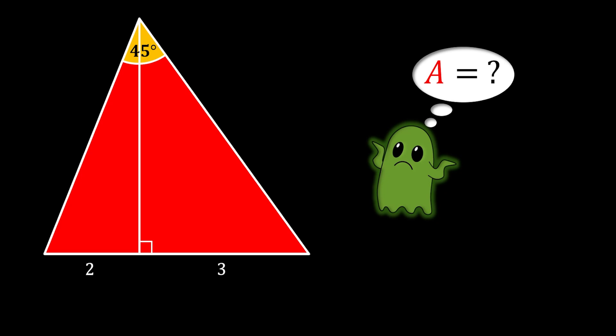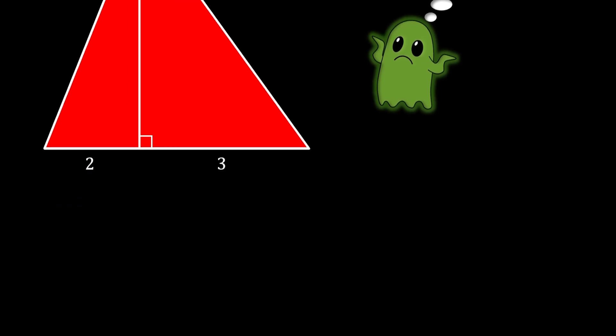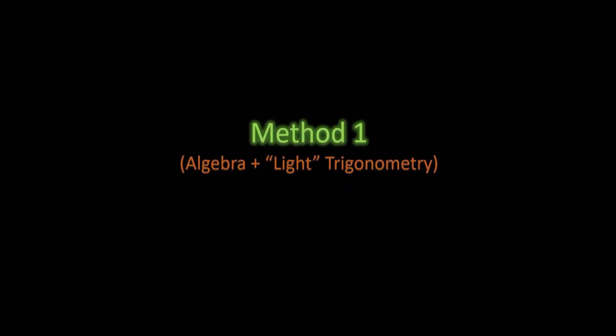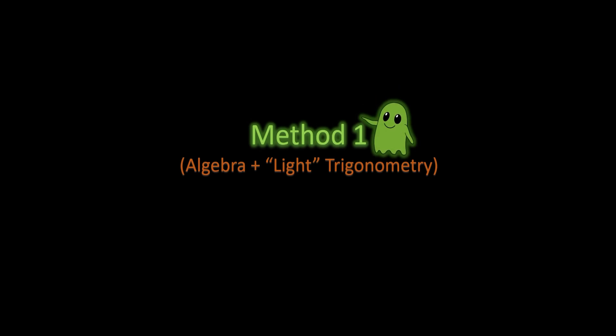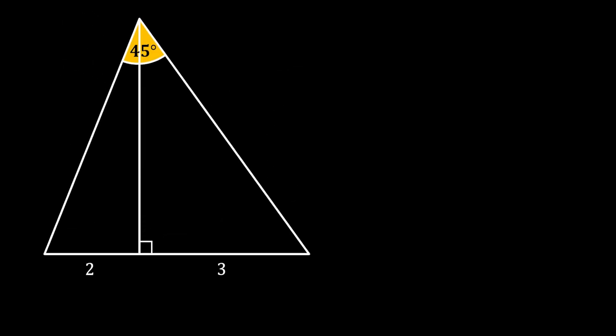I'm going to offer you two different methods to solve this problem. The first method will include algebra and light trigonometry. We are going to start by first labeling all the vertices of our triangle as A, B, and C. We will also label the intersection point between the height and the base of the triangle as D. For the sake of simplicity, let's also label the height of the triangle as H and the remaining sides as A and B.